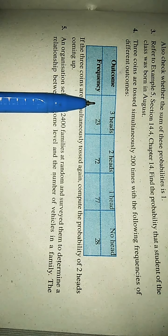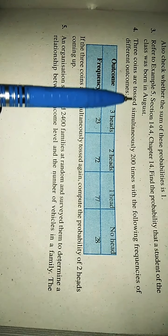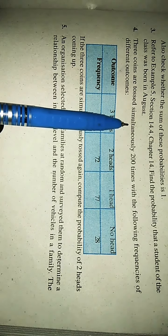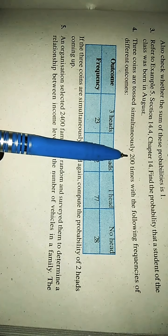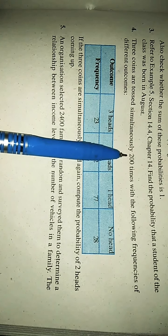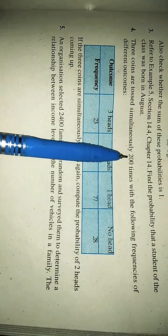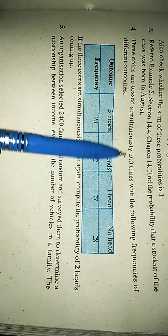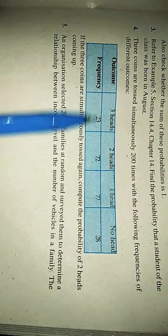Let us understand the question first. Three coins are tossed simultaneously, means at the same time, 200 times. What is this 200? For this question, this will be total number of trials. There are outcomes and frequency.